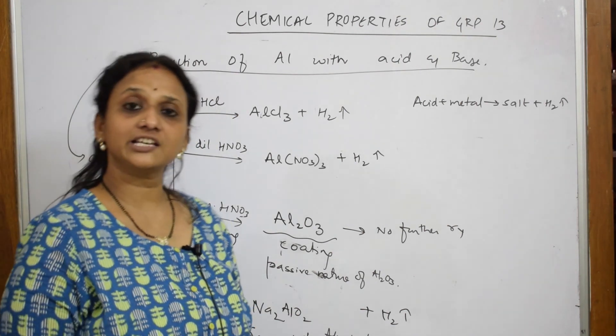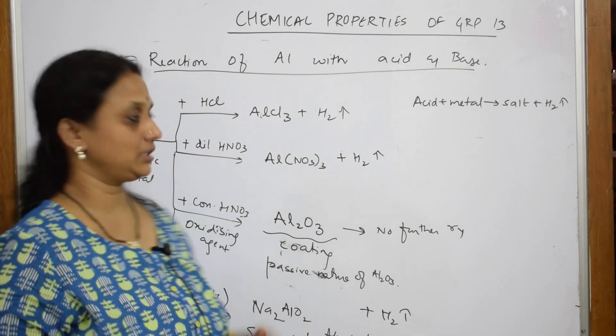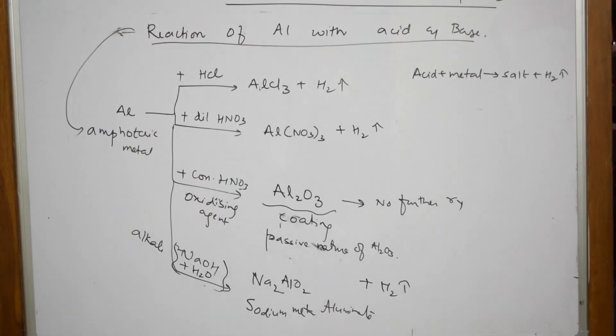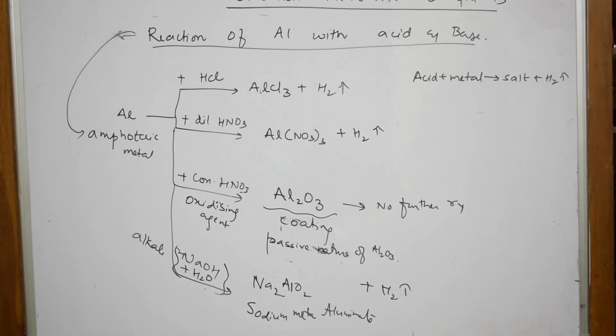How is this question asked? Explain the amphoteric nature of aluminum. You have to write all these reactions. Thank you.